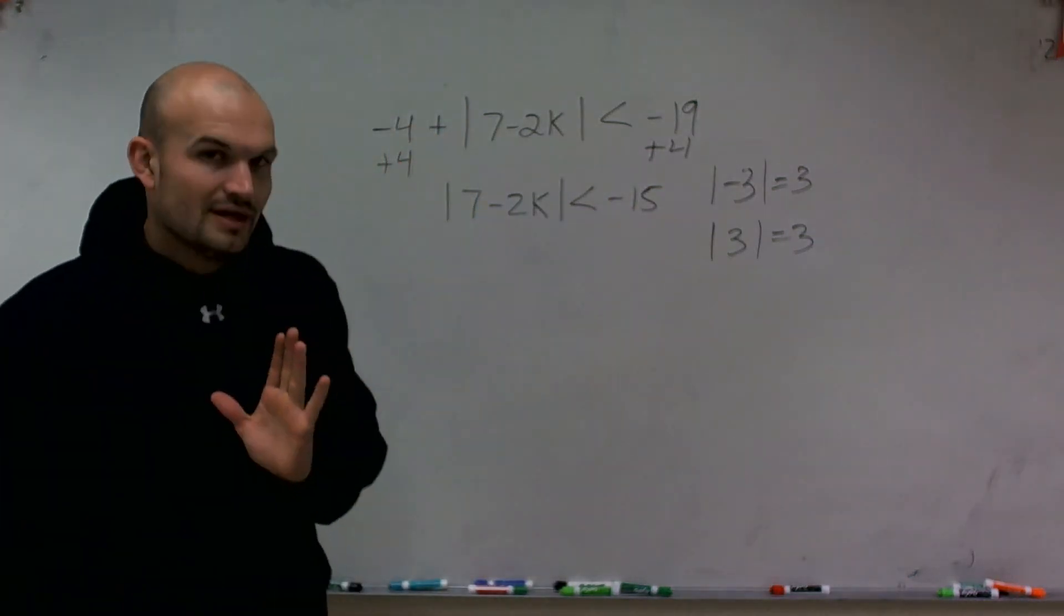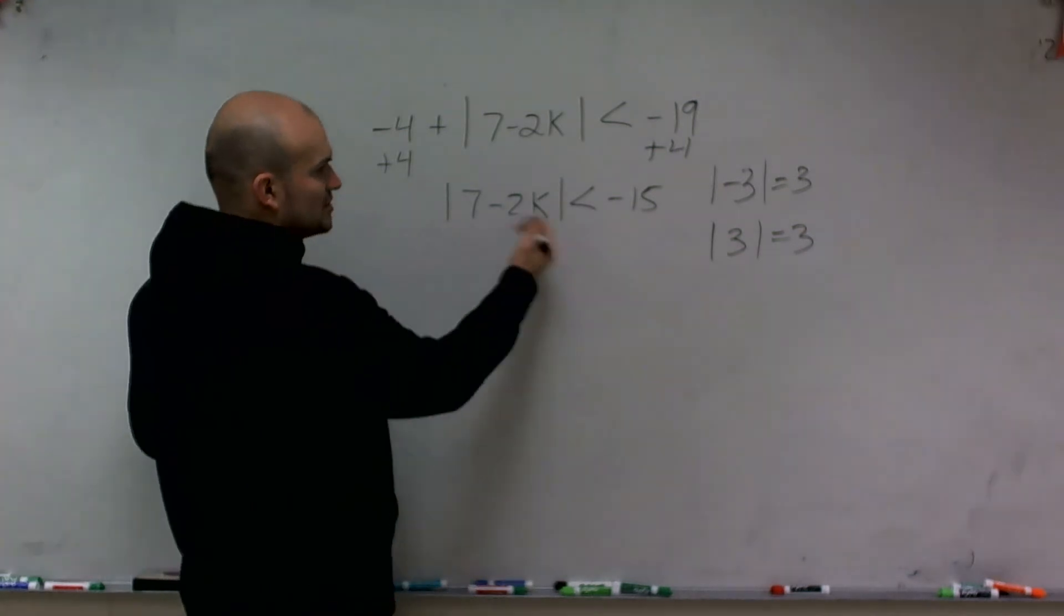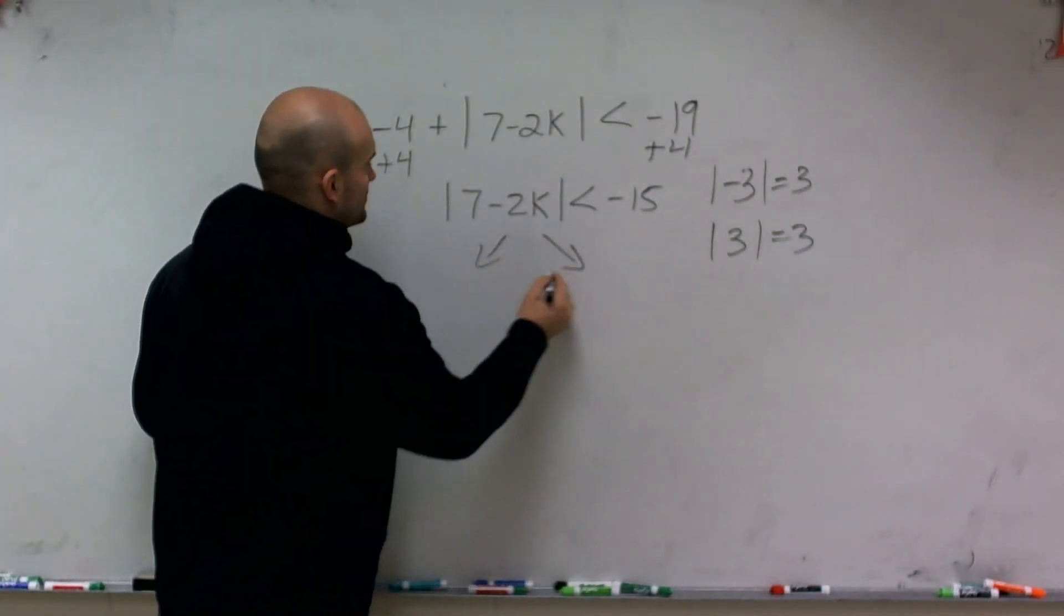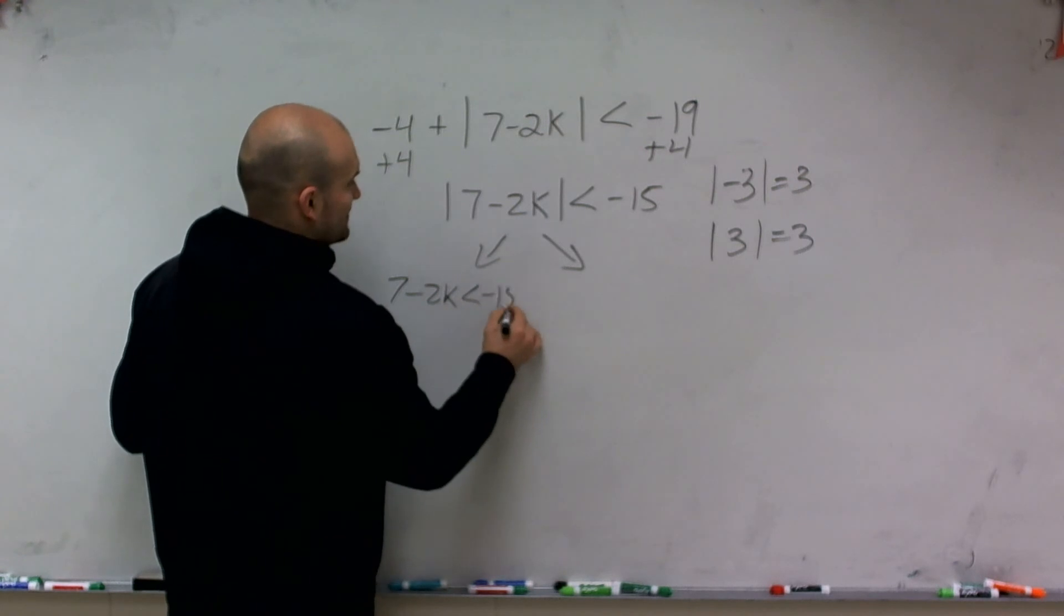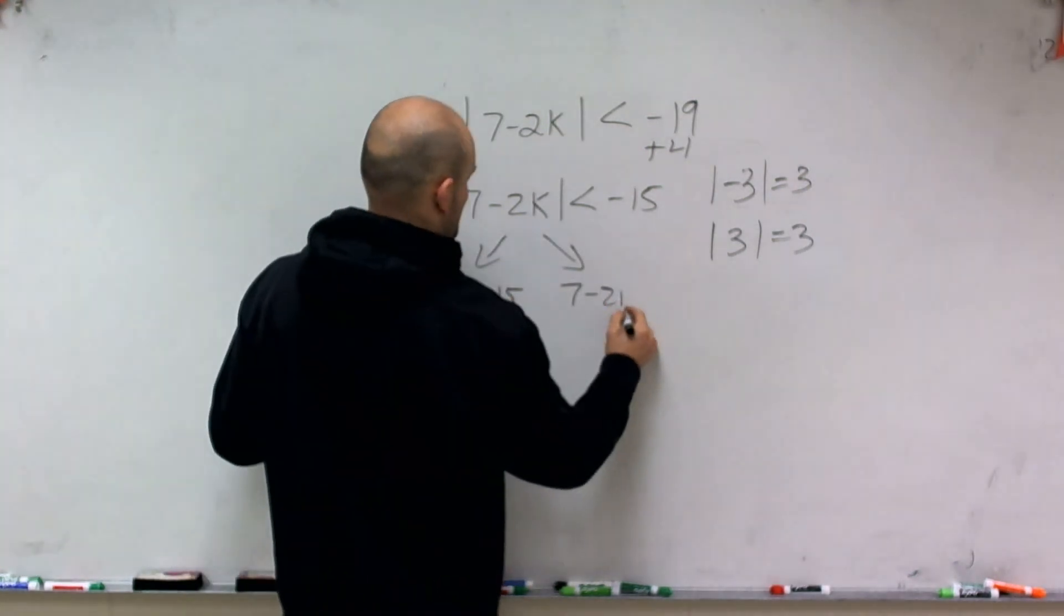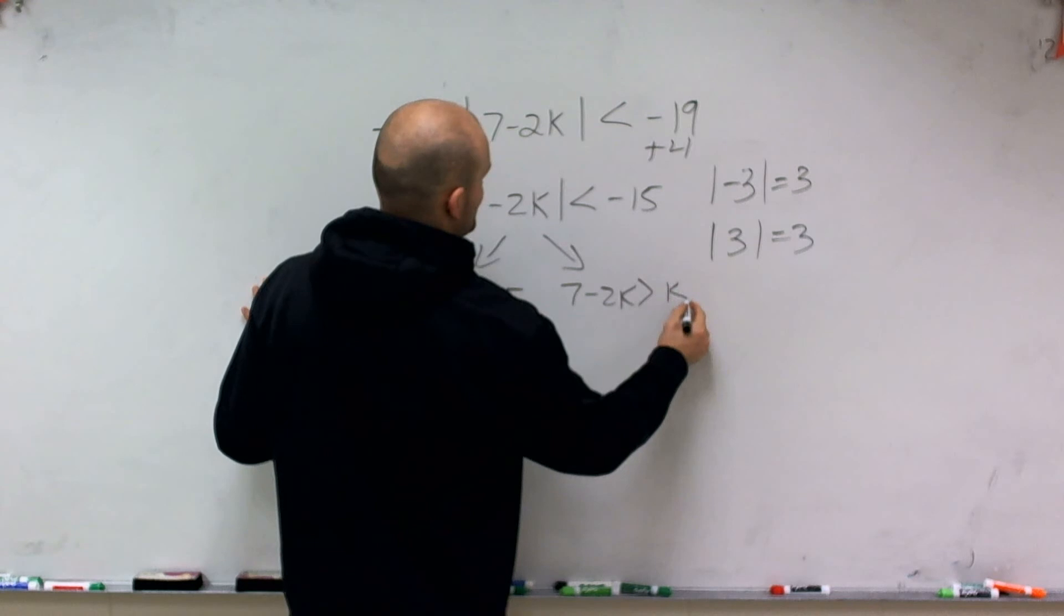Now, here's what we need to look at. Usually, what we do is we set up our two solutions, right? Which we look at 7 - 2k < -15 and 7 - 2k > 15. But here's our problem.